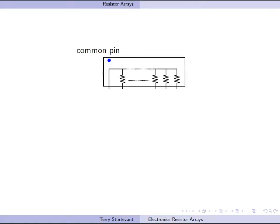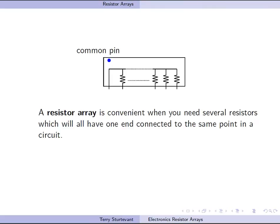Here you see what a resistor array looks like inside. You have a bunch of resistors, one end of which are in common, and that's what's connected to the common pin. A resistor array is convenient when you need several resistors which will all have one end connected to the same point in the circuit.